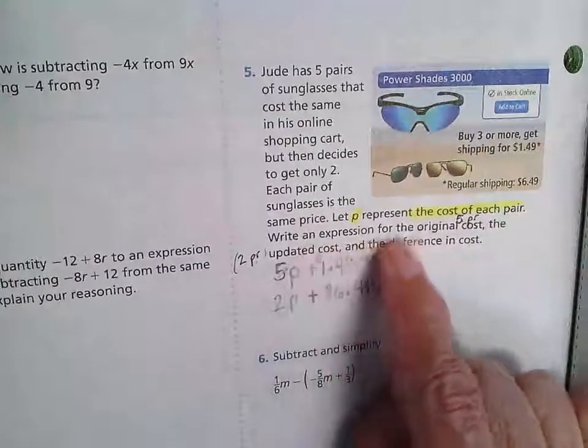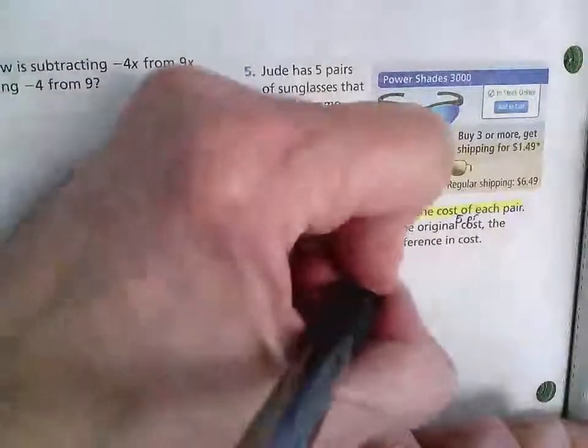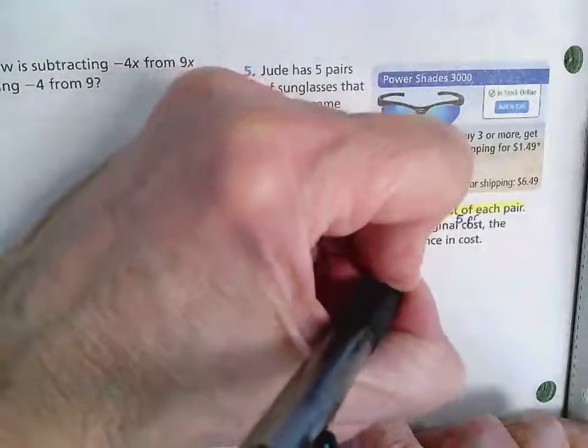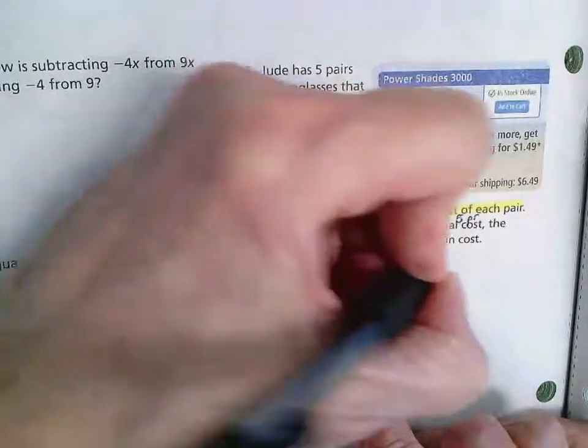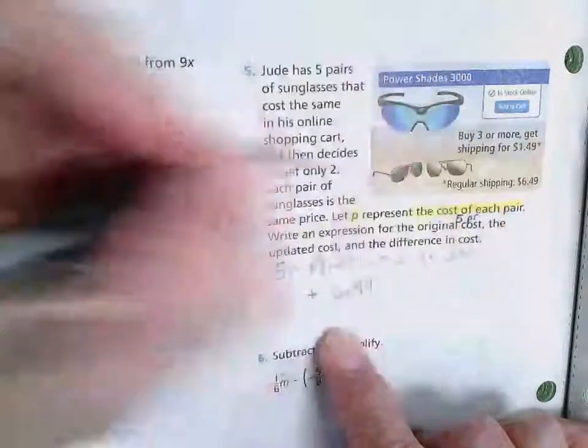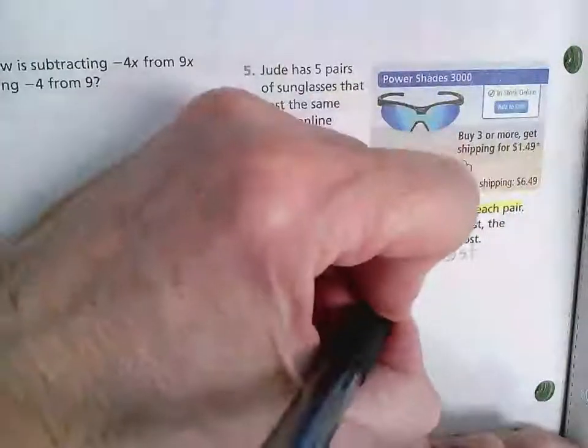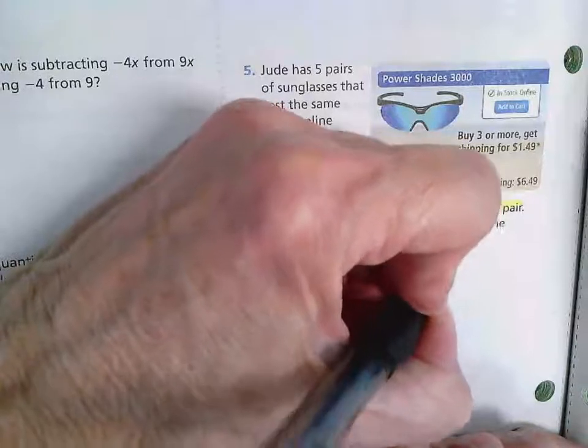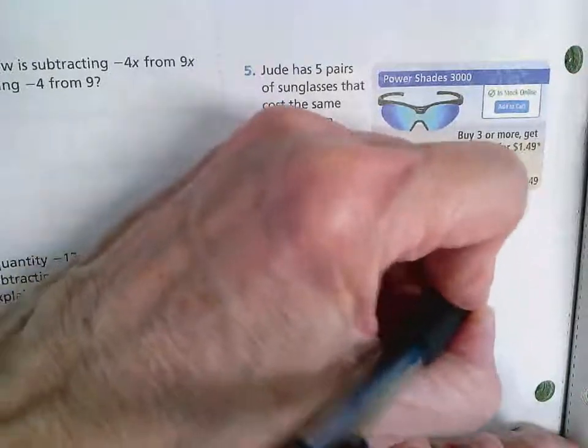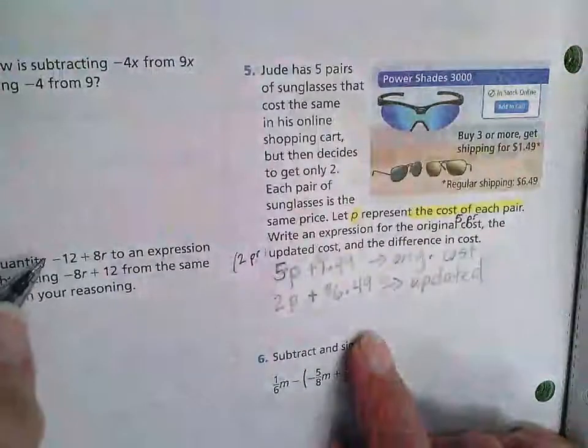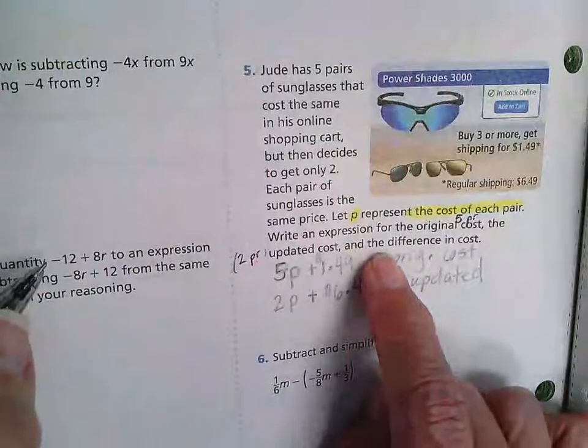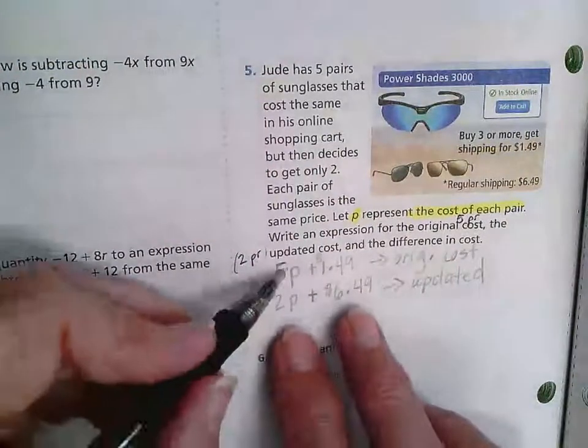So they want an expression for the original cost. This is the original. They want an expression for the updated cost. This is the updated. And then they want us to find the difference between these two.